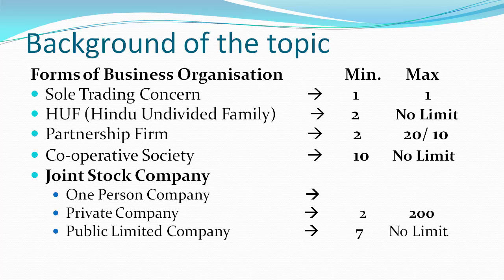There are various forms of business organizations that you can see in the market. The first form is a sole trading concern, also called a sole trading business or proprietorship business. In a sole trading organization, there is only one person who is the owner of the business. The minimum and maximum number of owners is only one person, that is why it is called a sole trading concern.